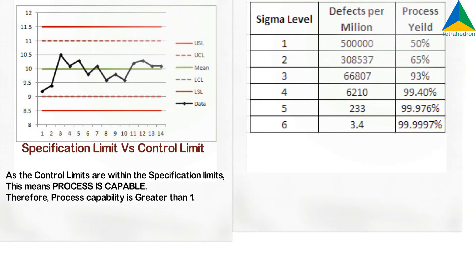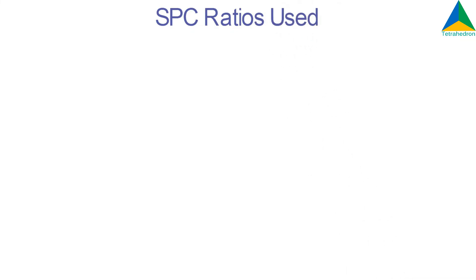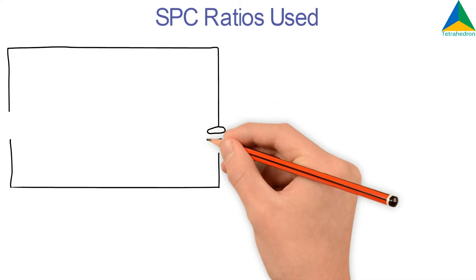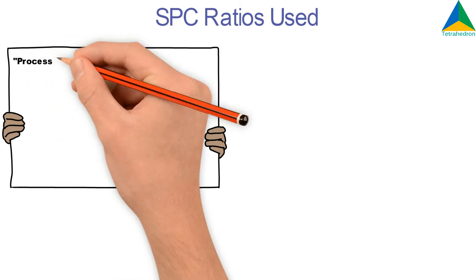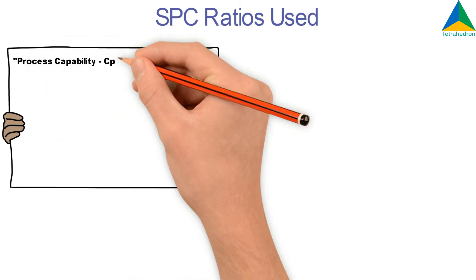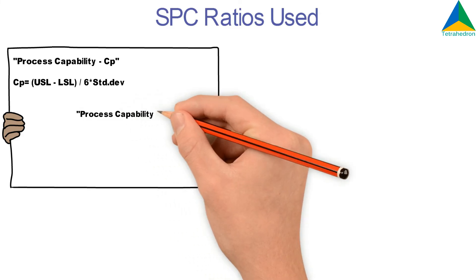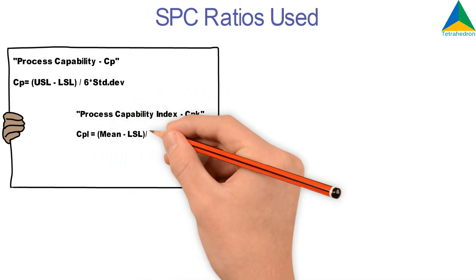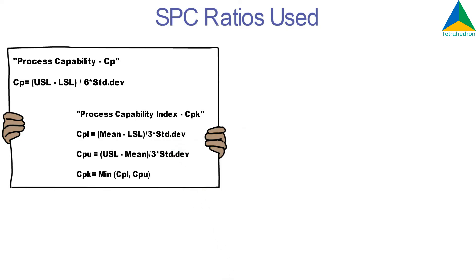Understanding process yield with respect to sigma levels. SPC ratios used: Process Capability CP is equal to the difference of the upper specification limit and lower specification limit, divided by 6 times the short-term standard deviation. Process Capability Index CPK measures how close you are to your target and how consistent you are around your short-term average performance.